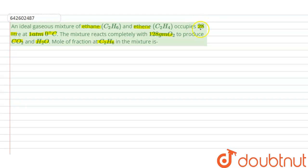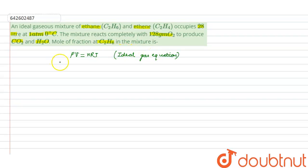The volume of the mixture is given as 28 liters, temperature is 0 degree Celsius at one atmospheric pressure. By using the ideal gas equation PV = nRT, we have pressure, volume of 28 liters, R is the universal gas constant, and T is the temperature given. So we can calculate n, the number of moles of the mixture of ethane and ethene, which equals PV divided by RT.